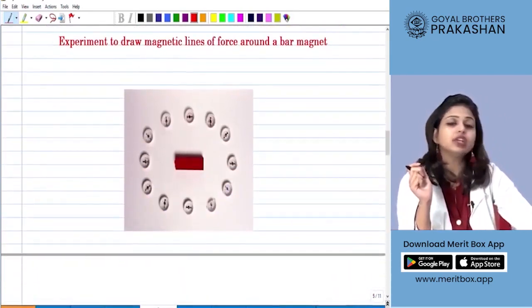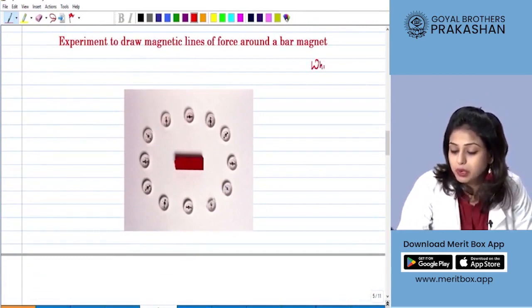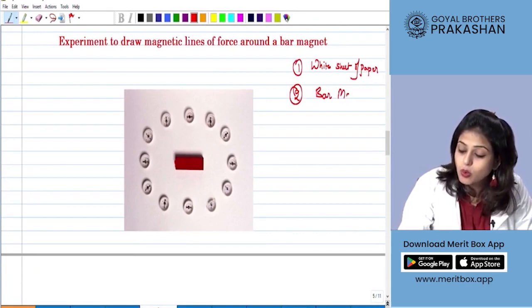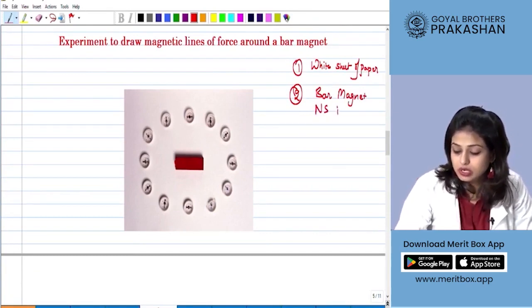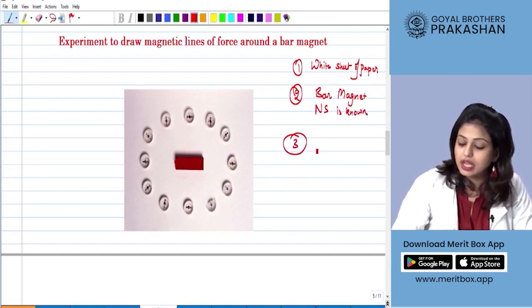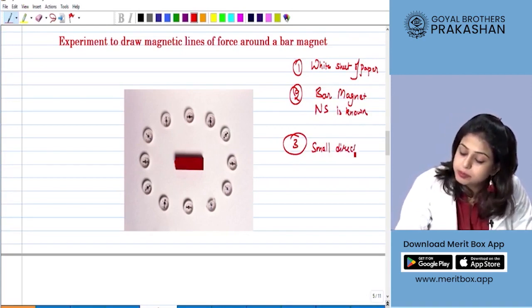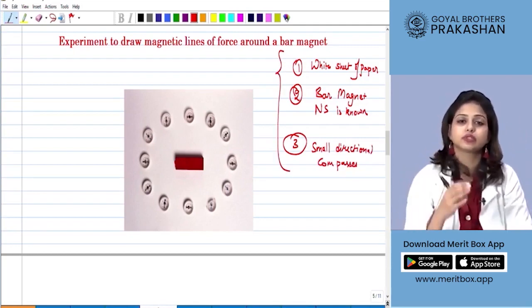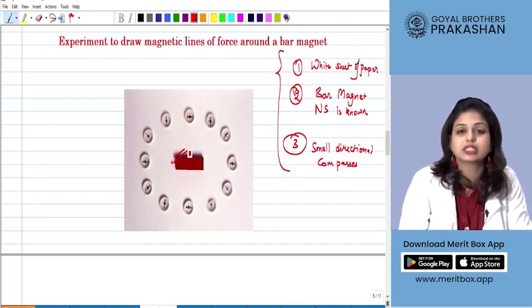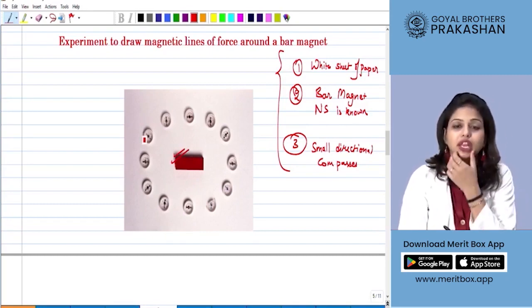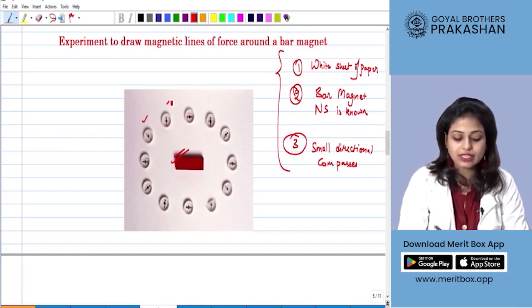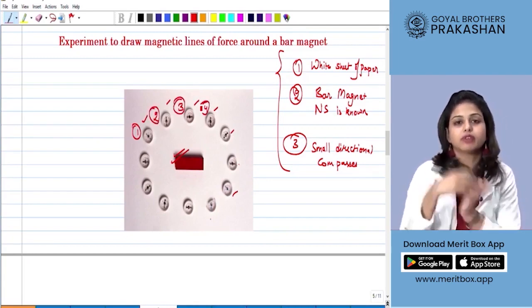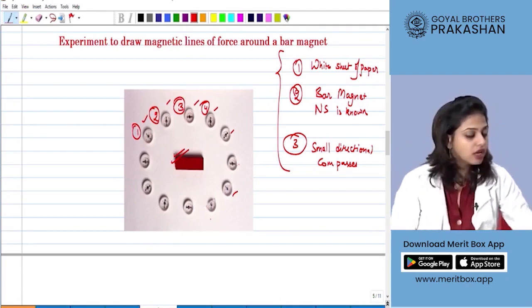In that activity we need three things: one is a white sheet of paper, two is a bar magnet whose north and south poles are known, and third is small directional compasses. Once you have all three components, you can test where the lines of forces are moving from. You have to place your bar magnet in the center of the white sheet. If you do not have a number of directional compasses, you can take one and place it over all the positions sequentially.